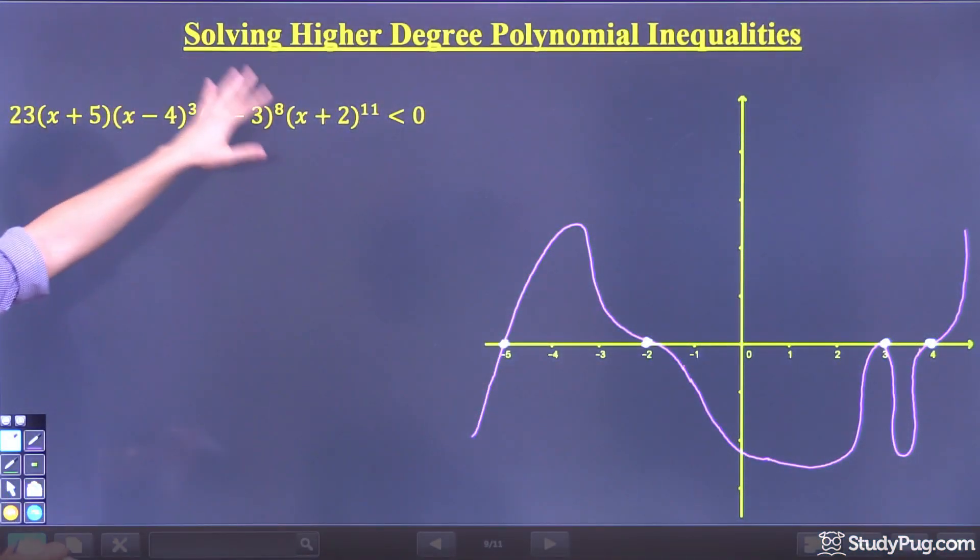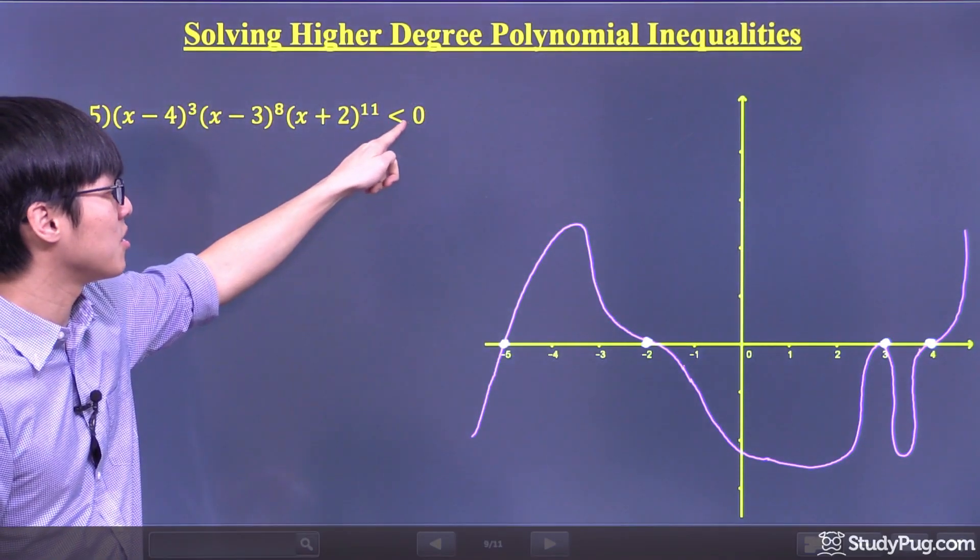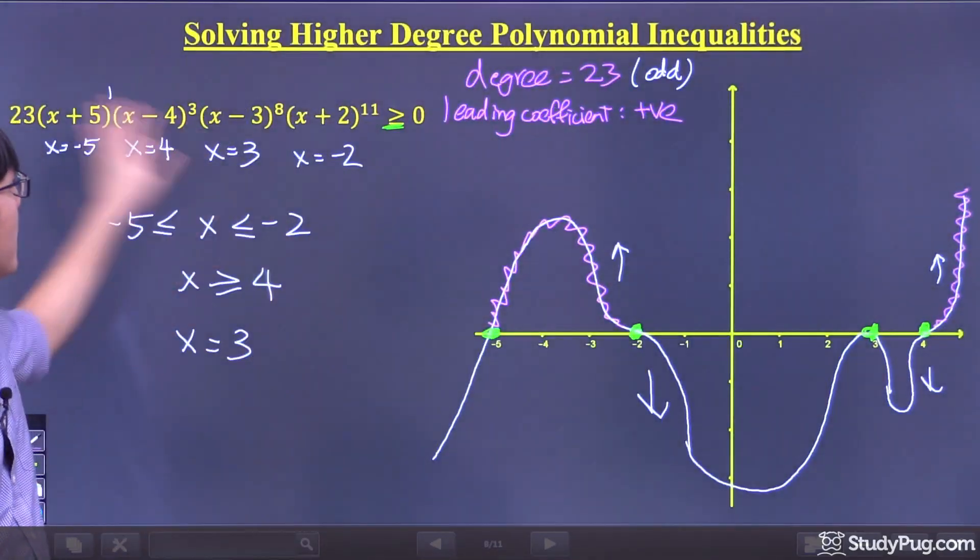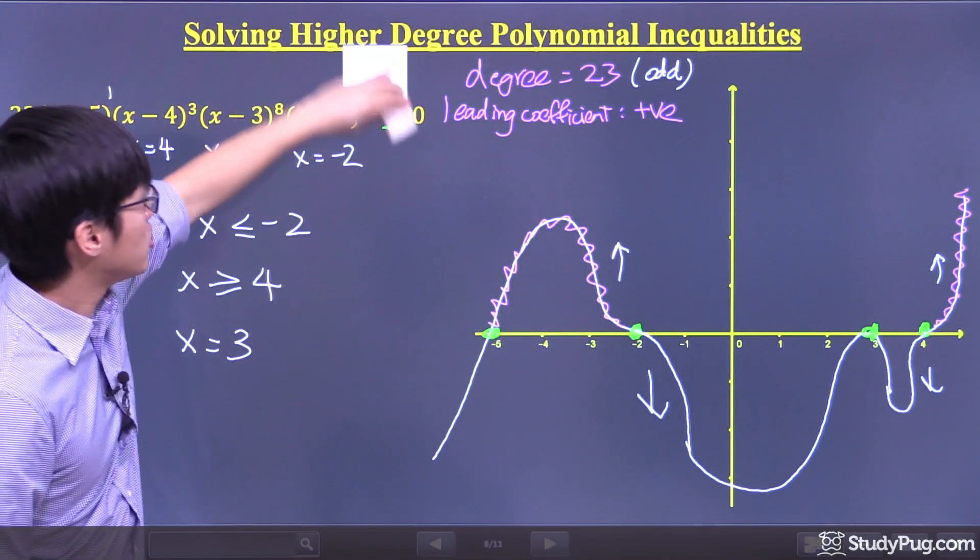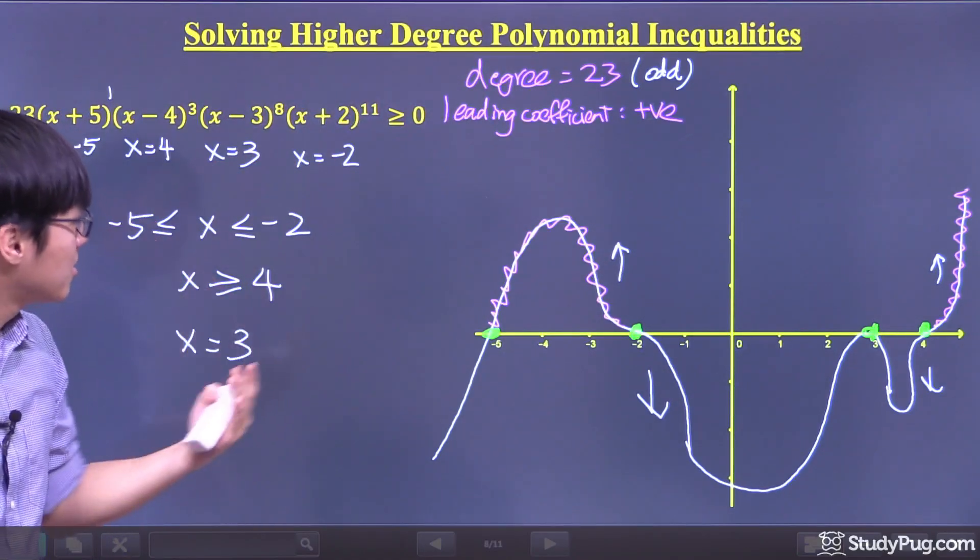This question is exactly the same as the previous question we just did, except that now it's less than zero. It's the same example. We were dealing with greater than or equal to zero, now we're dealing with less than zero. So that means we're just looking at the exact opposite of the graph.